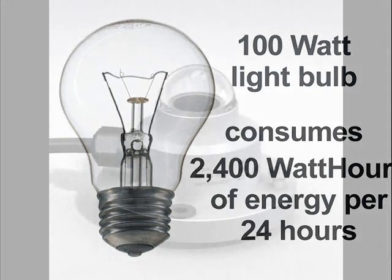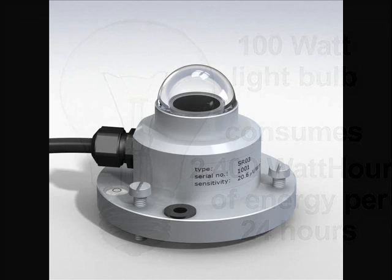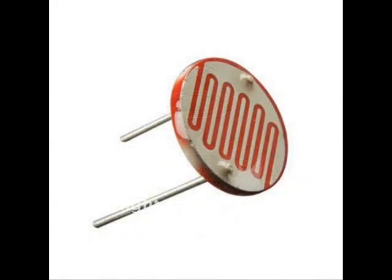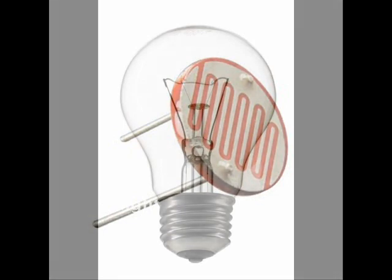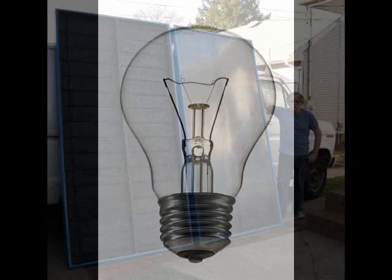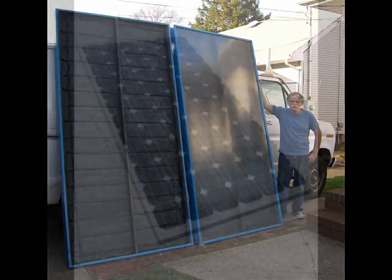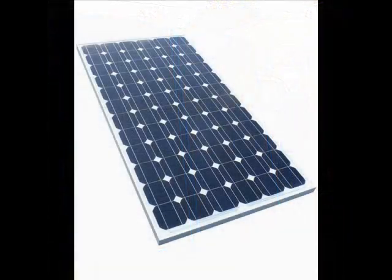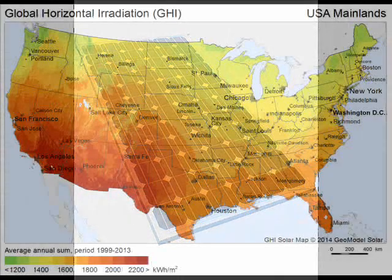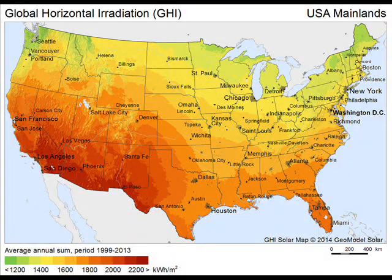To measure light power accurately, you'll need an expensive pyranometer. However, an inexpensive cadmium-sulfide cell could be used to approximate sunlight intensity. Electronic devices are often defined by the force or power they consume, while solar collectors and solar panels are defined by the energy they harvest under a specified luminosity. On a clear day at solar noon under ideal conditions, the radiant energy available in most USA mainland locations would be about 1 kilowatt-hour per meter squared.